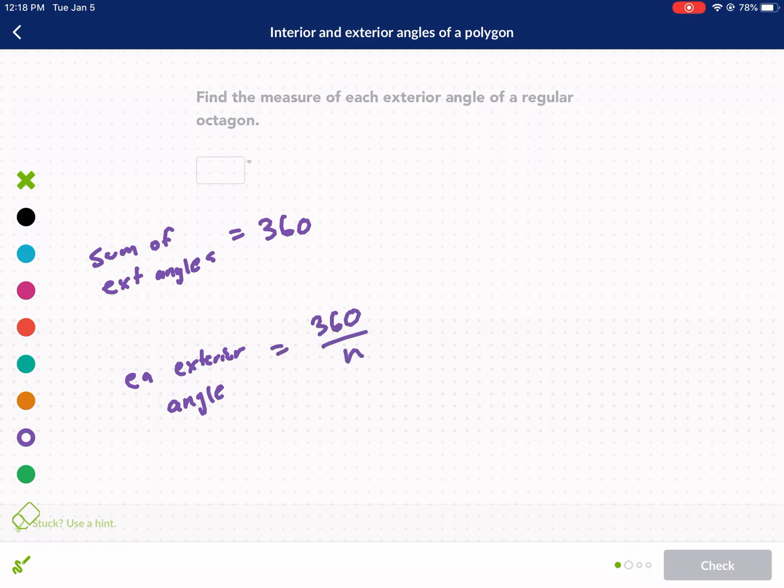Now each exterior angle is going to be equal to 360 divided by the number of sides. So if we know there's a certain number of sides, that means it's going to have the same number of sides as angles. So if we do 360, the sum of the exterior angles divided by the number of angles will tell us how much each is. Now we're told that n is equal to 8, that's the number of sides in an octagon.